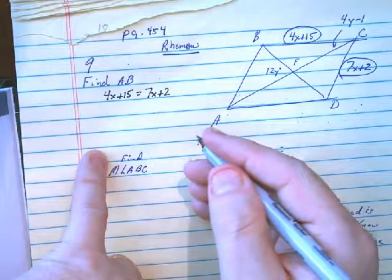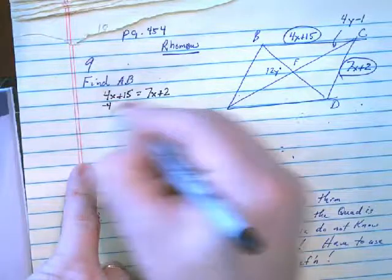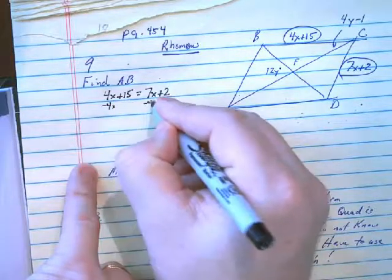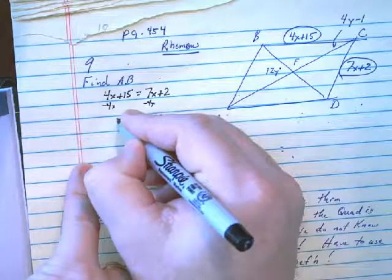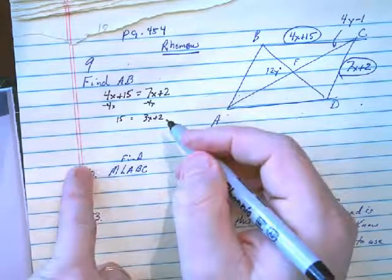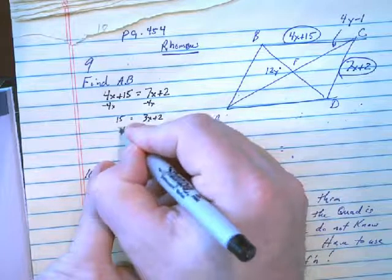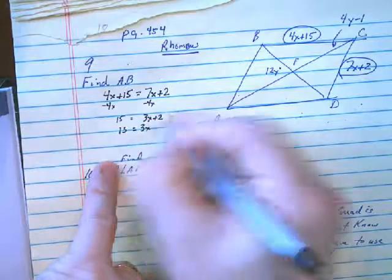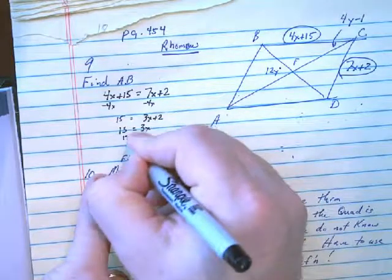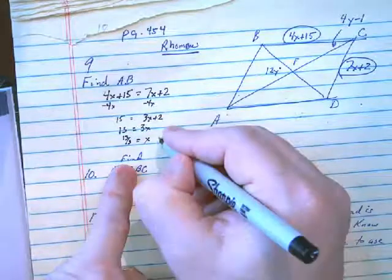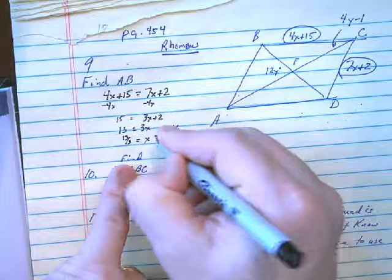Now go back to algebra. Let's solve this. We're gonna subtract 4x. I have 3x plus 2 is equal to 15. We'll subtract 2 and we got 13 is equal to 3x, and we divide by 3 and we have 13 over 3, which is 4 and 1/3.